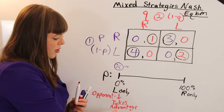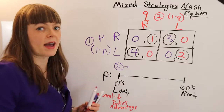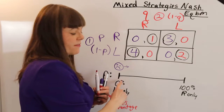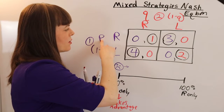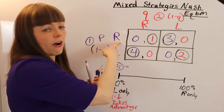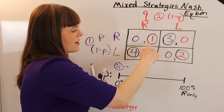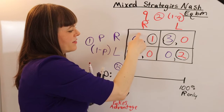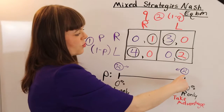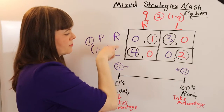If p equals zero, our opponent takes advantage and we wish we had played p at a higher rate. We might overshoot — what if p equals 100%, always choosing right? If our opponent notices that, their best response is to also go right, putting us in the box where our payoff is zero. We're also not happy at 100%, and our opponent takes advantage of us. We wish we would have set p to mix a little more between left and right.